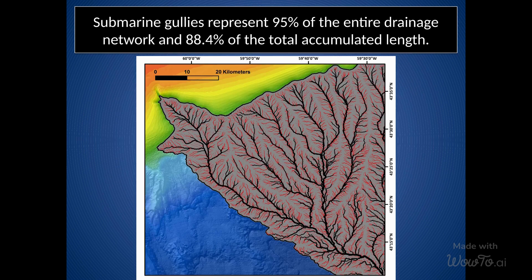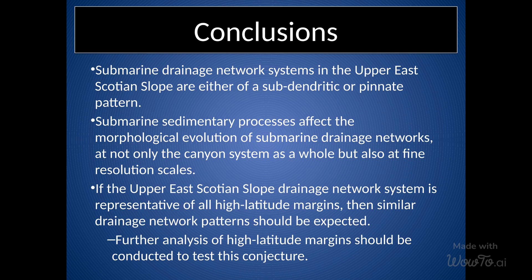These results provide an overview of the drainage patterns of these canyons and can be used to understand their topography and hydrodynamics, as well as to assist in the exploration of hydrocarbon resources in the region. Submarine gullies represent 95% of the entire drainage network and 88.4% of the total accumulated length, playing a prominent role in submarine drainage network development. Submarine drainage network systems in the Upper East Scotian Slope are either of a sub-dendritic or pinnate pattern. If this drainage network system is representative of all high-latitude margins, then similar drainage network patterns should be expected, and further analysis of high-latitude margins should be conducted to test this conjecture.